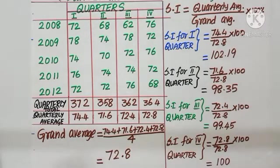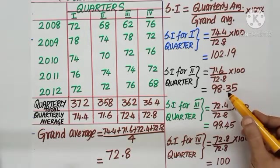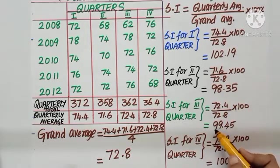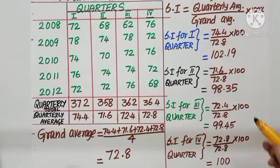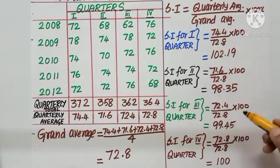As we try to simplify, we get 102.19, 98.35, 99.45 and 100 for the 4 different quarters. This tells us the value is more in first quarter and no change in fourth quarter. Second and third quarter, it is little less.